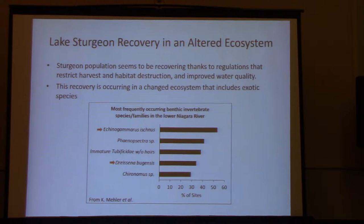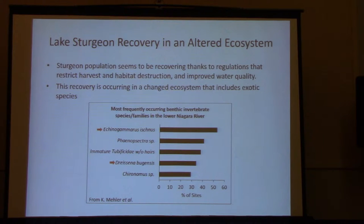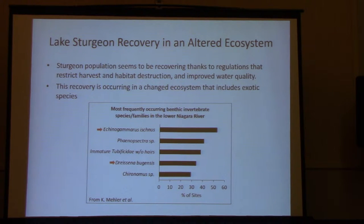This recovery of sturgeon in the lower Niagara is occurring in a system that is completely different from the historical ecosystem. This figure from a colleague at Buffalo State, Dr. Mailer, conducted a survey of the benthic invertebrate families found in the lower river using Ponar grabs. These are the top five families found, and two of them — indicated with arrows — are invasive species, including the number one most commonly found, Echinogammarus ischnus, an invasive amphipod found in over 50% of the sites. The other invasive is quagga mussels.